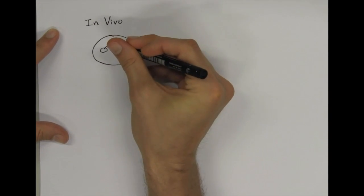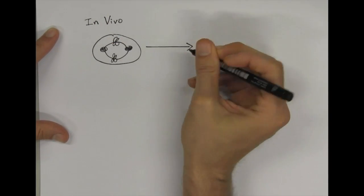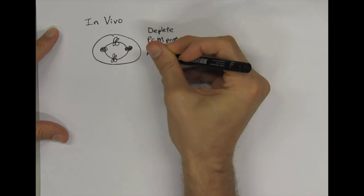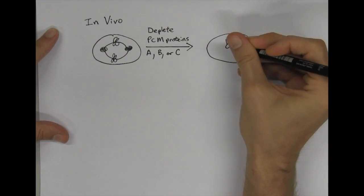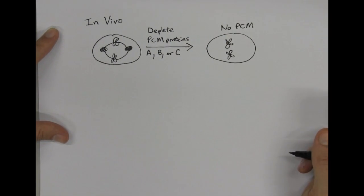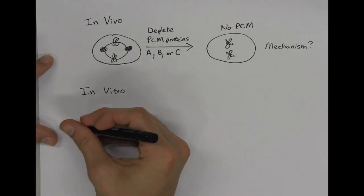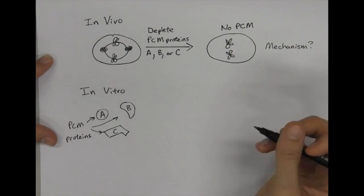So far, the mechanisms underlying PCM assembly have been difficult to nail down using in vivo approaches, primarily due to the complexity of the PCM. Thus, the goal of my research is to reconstitute PCM assembly in vitro, using a minimal set of purified recombinant proteins.